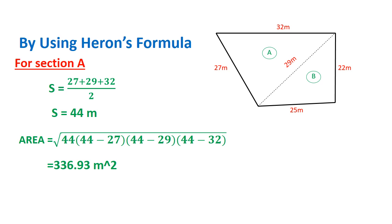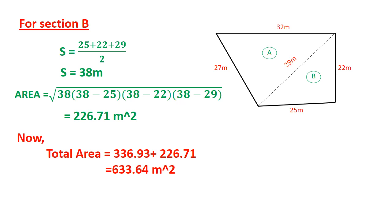For section 1, A, B, and C distances are already known. We get S equal to 44 meters. Using the formula for finding the area, these values are known to us and the area comes out to around 336.93 square meters. Now consider the area for section 2. We follow the same procedure: we know the distances A, B, and C. This one is considered as A, this one as B, and this one as C. We get S around 38 meters. Putting this value into the main formula, we get the area around 226.71 square meters.